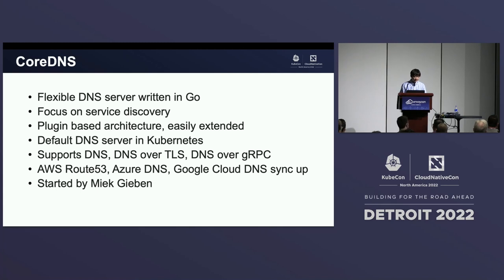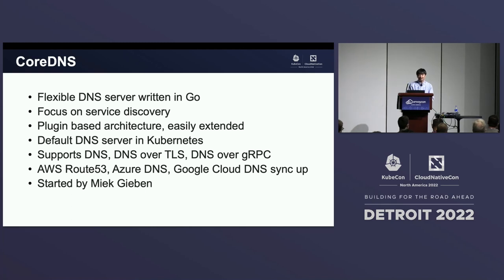In addition to those different protocols, another thing CoreDNS excels with is the consolidation of different cloud-related DNS information. For example, with CoreDNS you can sync up with the AWS Route 53, you can sync up with Azure DNS, or you can sync up with Google Cloud DNS. That gives you plenty of flexibility and allows you to consolidate in case you are doing a multi-cloud deployment.